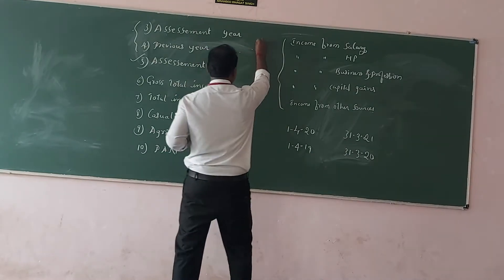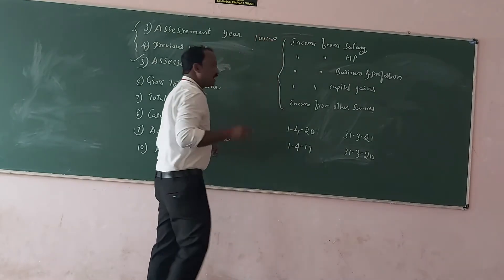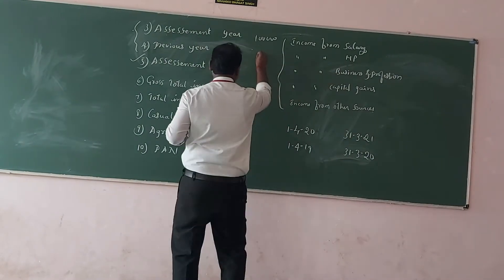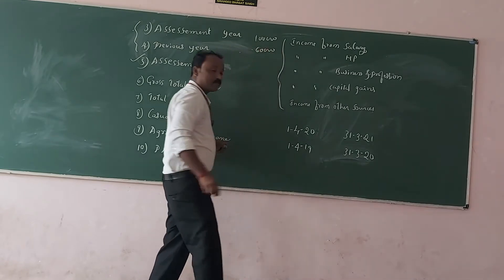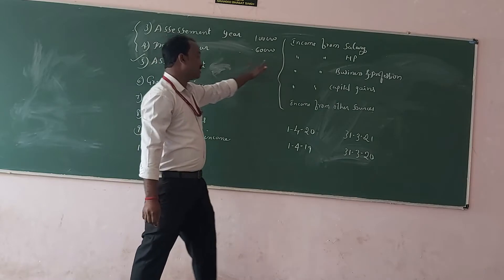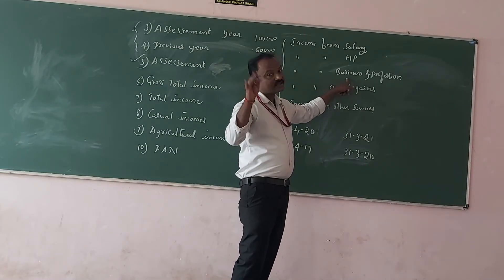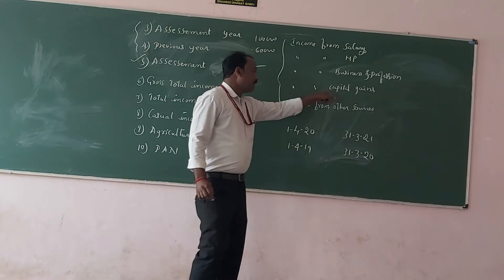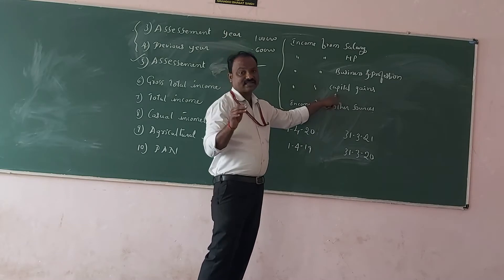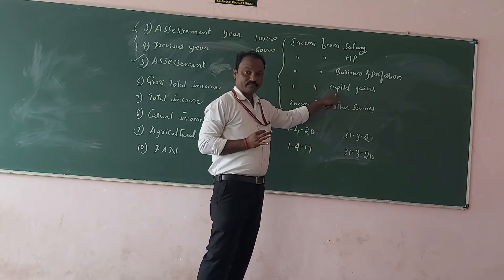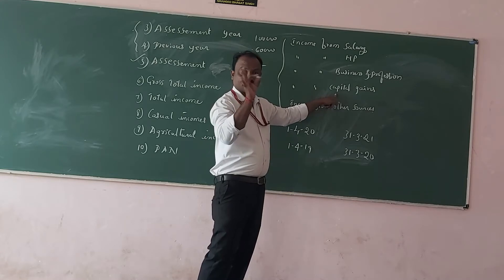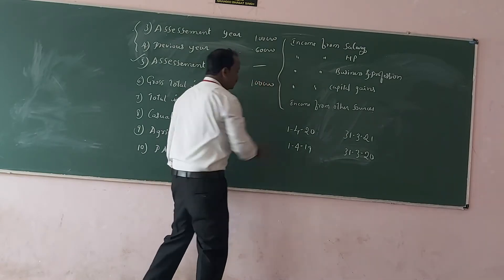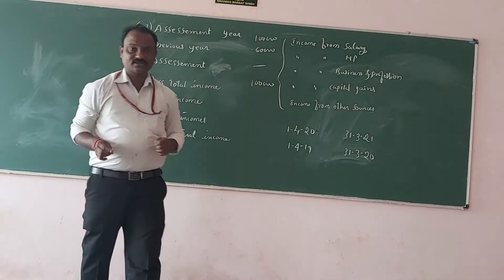For example, an assessee has earned salary of one lakh in a year. He also has a house property from which he has received income of 60,000. He is not engaged in any business or profession, so there is no income from that head. From capital gains — income arising out of transfer of properties — he has sold a house property and earned income of one lakh.